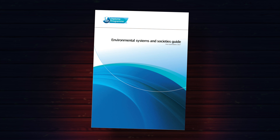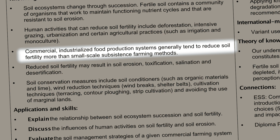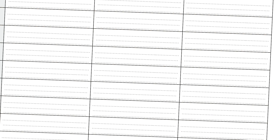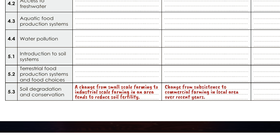For example, if we look at the objectives for chapter 5.3, we can see that commercial industrialised food production systems generally tend to reduce soil fertility more than small-scale subsistence farming methods — that's where I got the idea for the environmental issue I mentioned about farming. Once you've got ideas for each subchapter, come up with a local or global example for as many of them as possible. Maybe there's been a change from subsistence farming to commercial farming in the area around your home city — that would be a good place to collect some data.